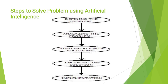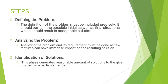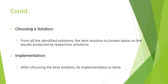Steps to Solve a Problem Using Artificial Intelligence. The process of solving a problem consists of 5 steps. First is Defining the Problem — the definition must be included precisely and should contain the possible initial as well as final situation. Second is Analyzing the Problem — its requirements must be done as a few features can have immense impact on the resulting solutions. Third is Identification of Solutions — this generates a reasonable amount of solutions to the given problem. Fourth is Choosing the Solution — the best solution is chosen based on the results produced. Fifth is Implementation — after choosing the best solution, implementation is done.